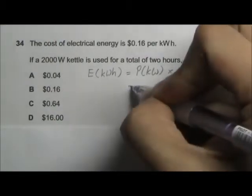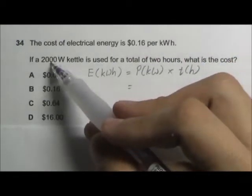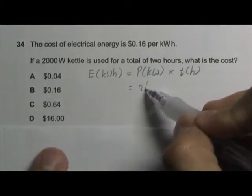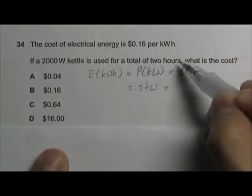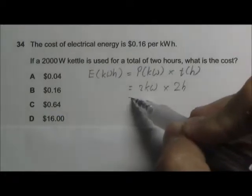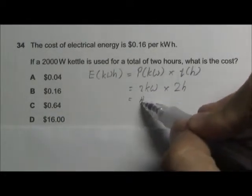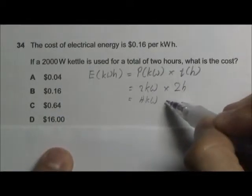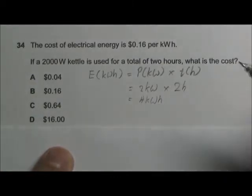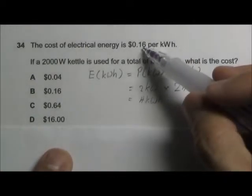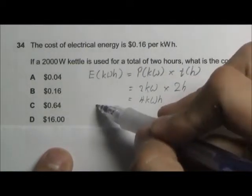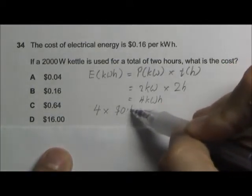So this will be 2000 watts, which is 2 kilowatts, and time is 2 hours. All together, we use 4 kilowatt-hours of electricity. One kilowatt-hour costs 16 cents, so 4 kilowatt-hours will be 4 times 16 cents, which is 64 cents, answer C.